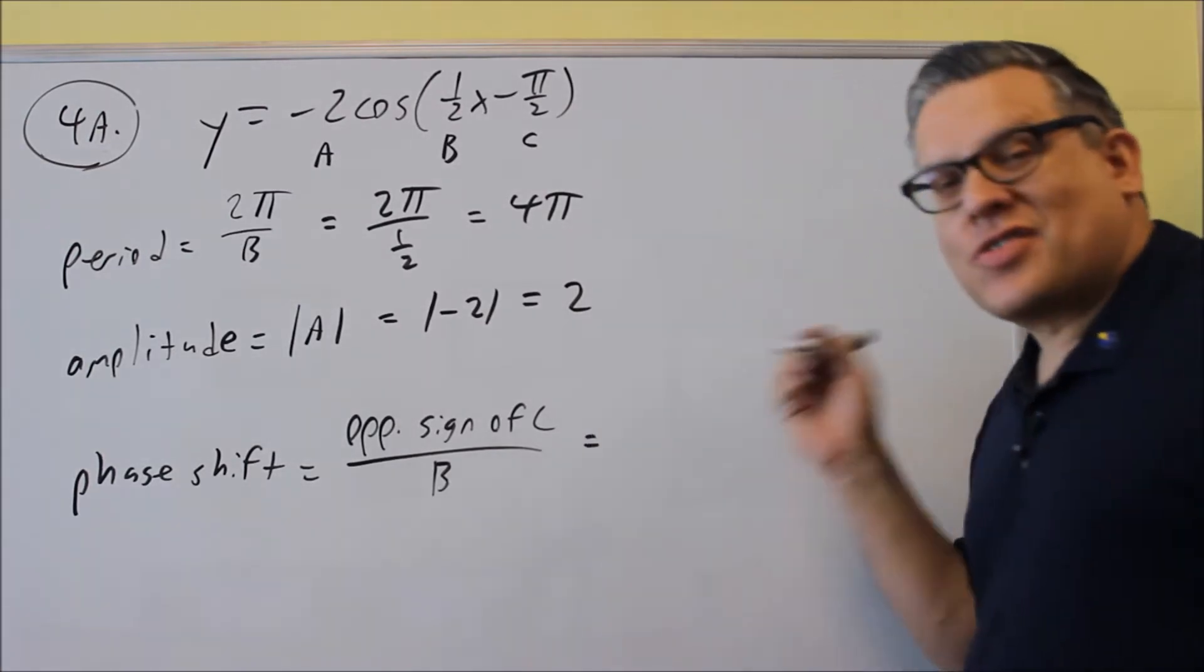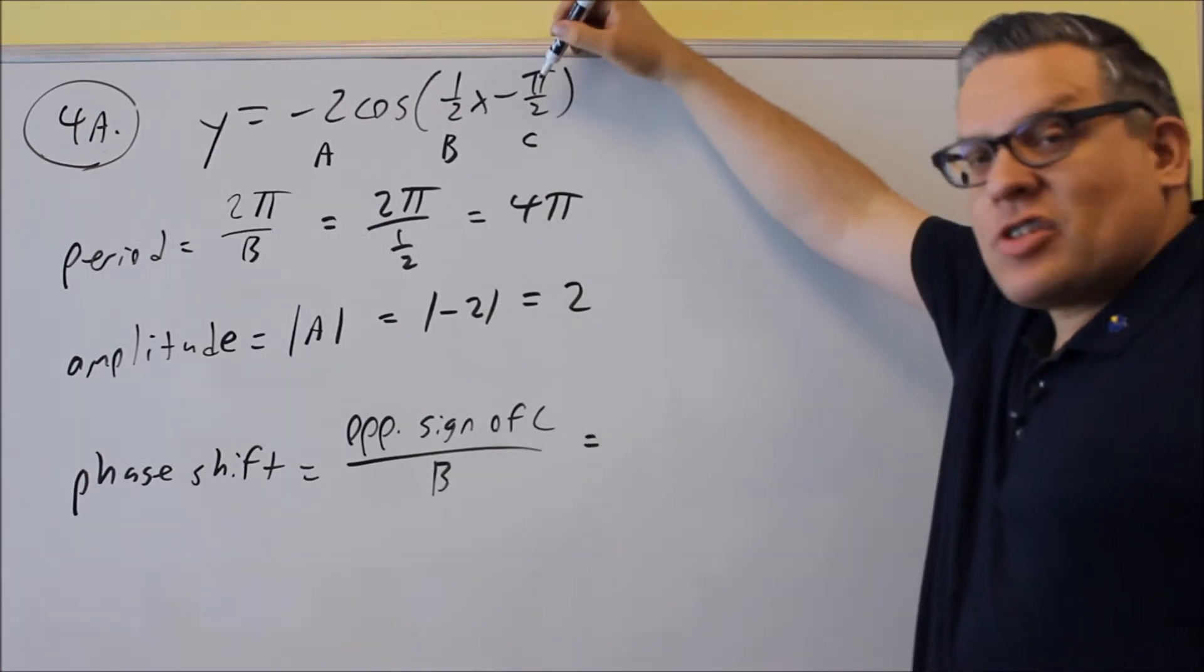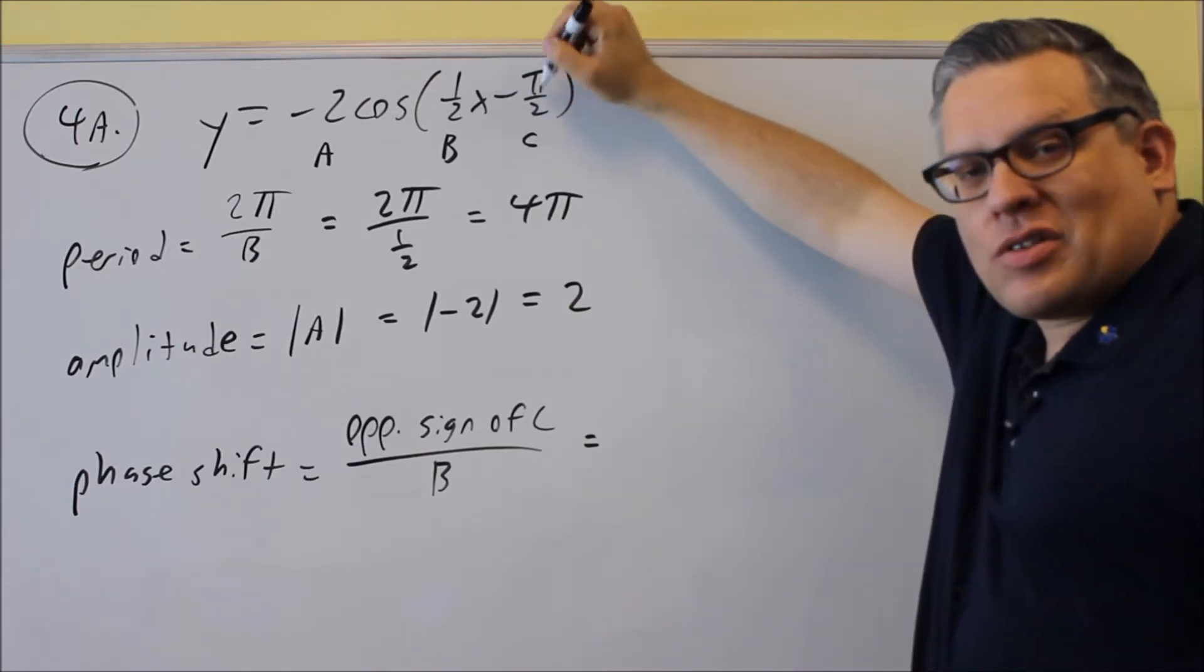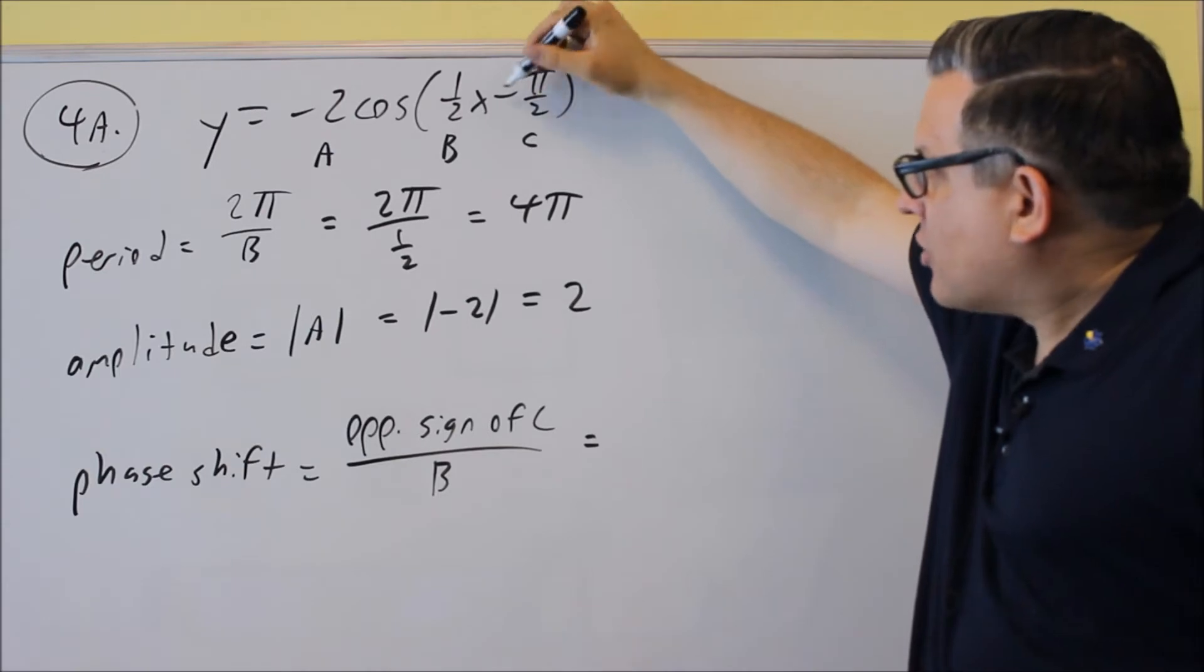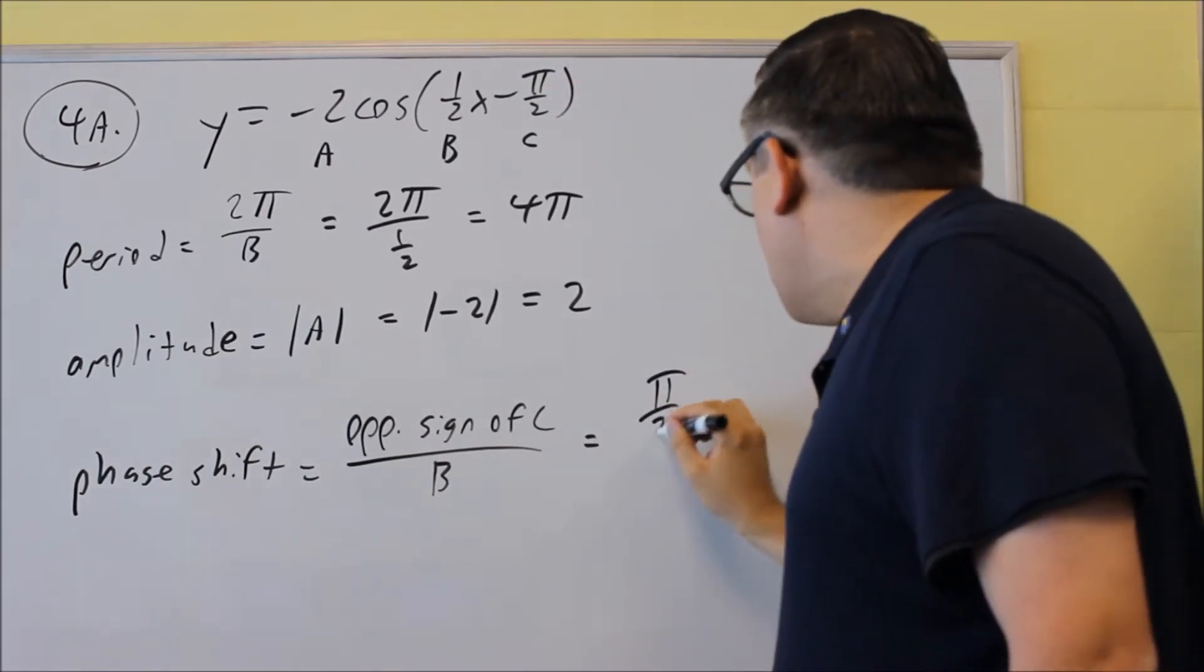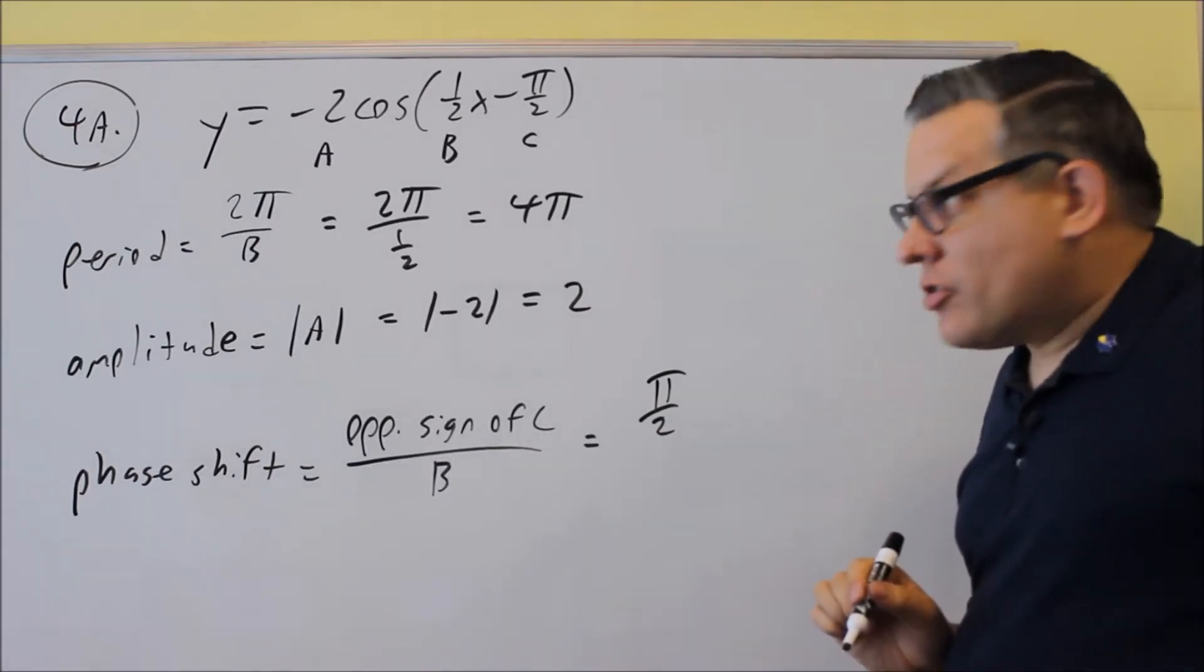This one, you're doing the opposite sign of c over b. Okay, now opposite sign means whatever sign that you see inside the parentheses, that's the one you want to take the opposite sign of. So, because it's -π/2, when you put it in the formula, it's going to become positive π/2.